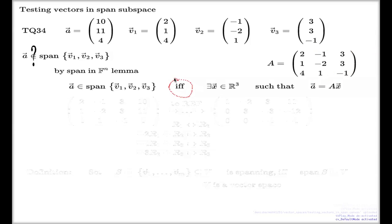First column is v1 vector, second column v2 vector, third one is v3 vector. This if and only if comes from the span in Rn lemma we just discussed. So rather than testing this, I will test this existence.